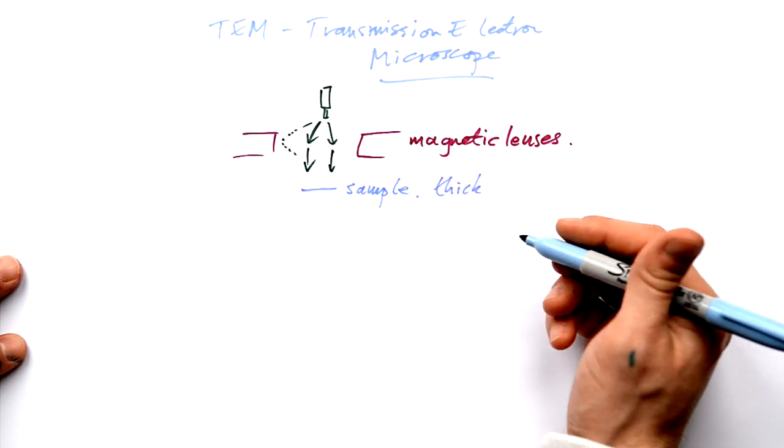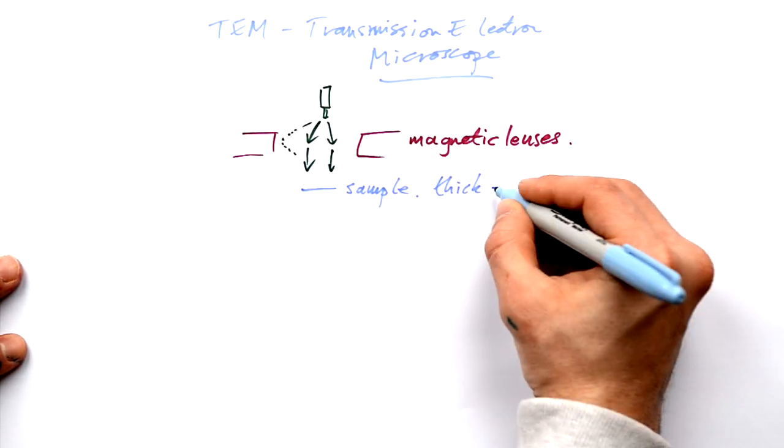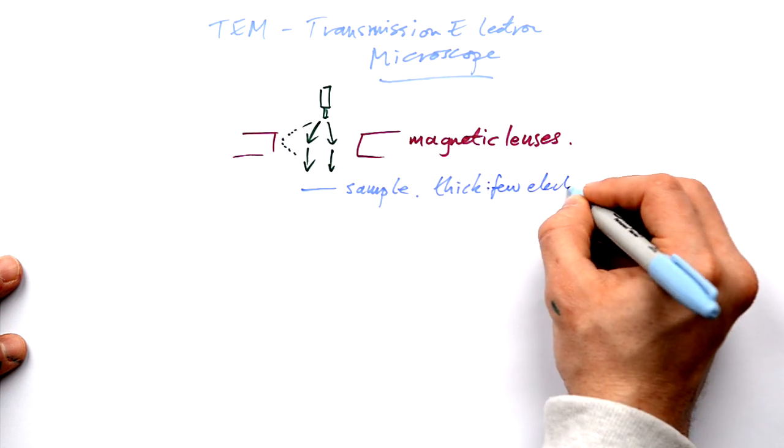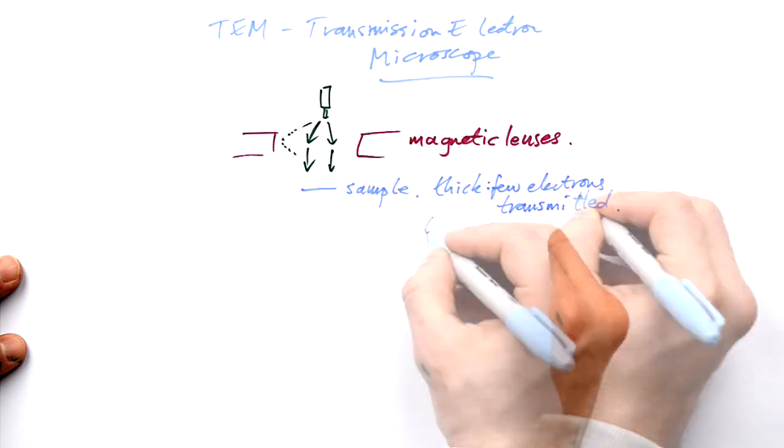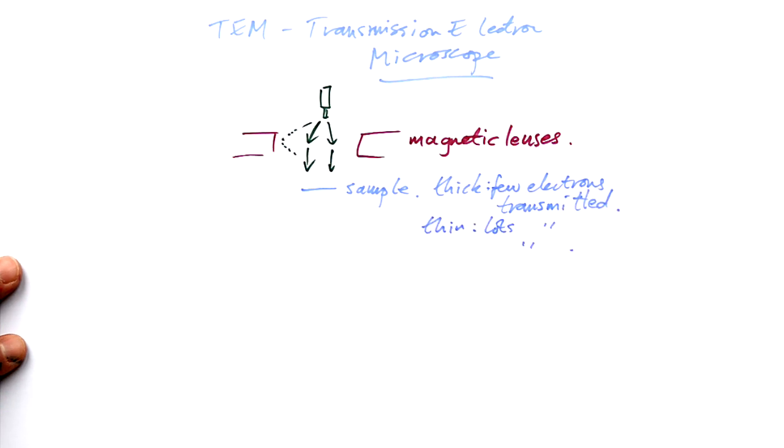Now with your sample where it's thick and you have lots of atoms, then you have few electrons transmitted. In other words, let through, passing through. Where it's thin, you have lots of electrons transmitted.